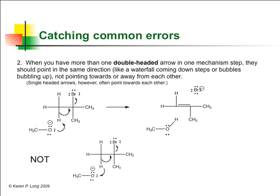Secondly, you might have noticed that when more than one double-headed arrow is drawn on a structure, the arrows are all pointing in the same direction, like a waterfall coming down steps or bubbles bubbling up. A diagram with double-headed arrows pointing toward each other or away from each other is a sign that you need to rethink that answer. The arrows proceed in domino fashion, like the waterfall or the bubbles, because they represent one pair of electrons being pushed out or leaving because another is coming in.